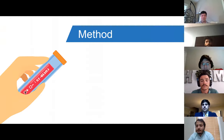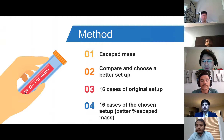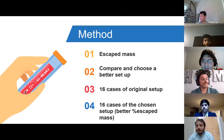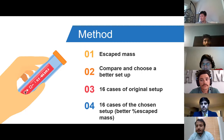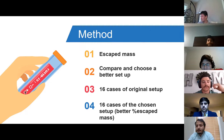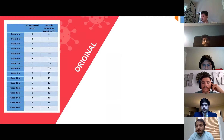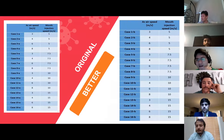We have two scenarios but they follow the same method. We study the escape mass by placing a monitor at the outlet. Besides the original setup, we create several AC vent configurations and apply the same AC speed and coughing speed conditions to each. At the end of the simulation, whichever setup has the better percentage of escape mass is chosen for further investigation. There will be 16 cases of the original setup and 16 cases of the best chosen setup.